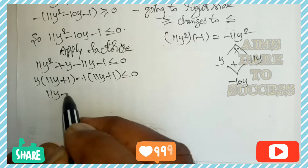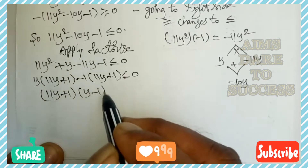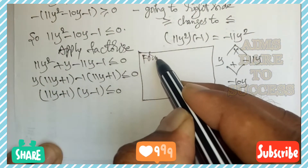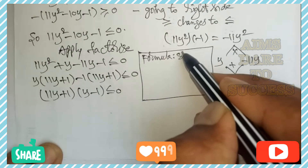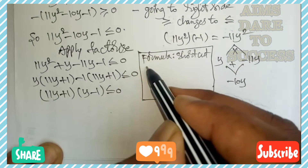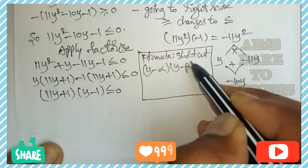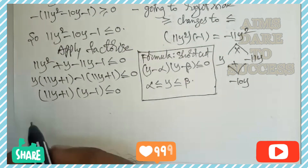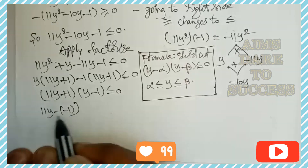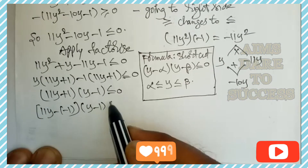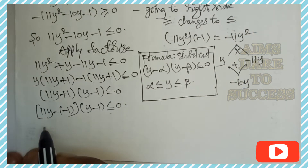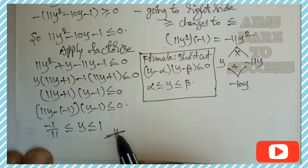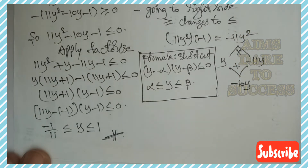From both brackets, (11y + 1) is common, leaving (y − 1), so: (11y + 1)(y − 1) ≤ 0. Now applying the shortcut formula: if (y − α)(y − β) ≤ 0, then α ≤ y ≤ β, where α is the smaller number. Rewriting: 11(y − (−1/11))(y − 1) ≤ 0, so the answer is −1/11 ≤ y ≤ 1.